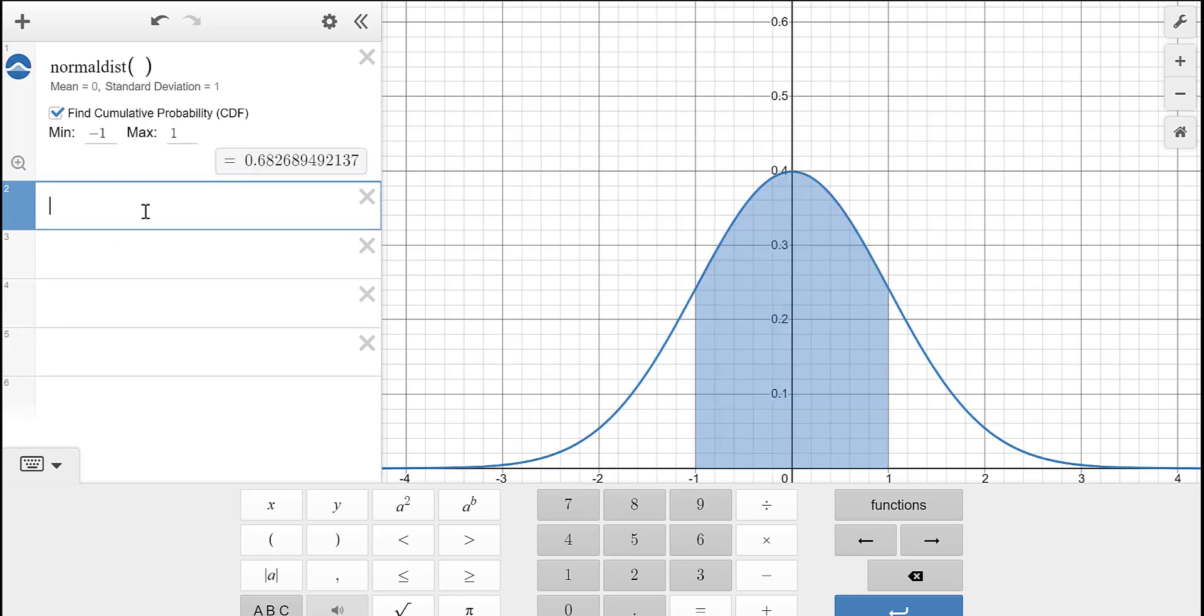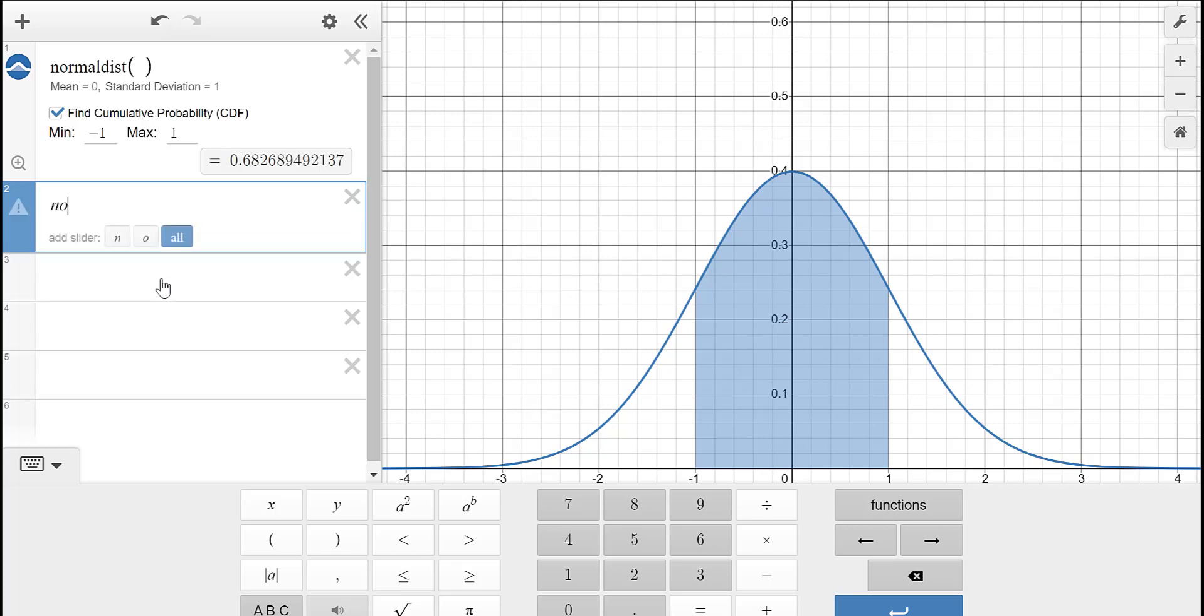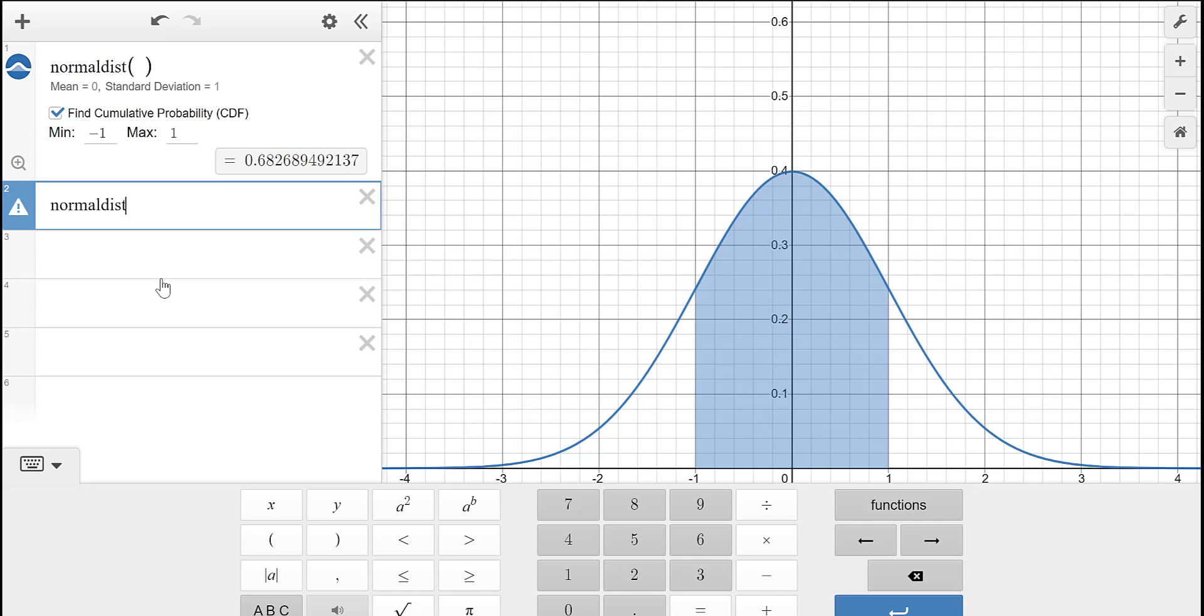So what we want to do today is go backwards and say, well, what if we wanted to know what z-score gives us 95 percentile? So what if 95% of the values are less than this number? So to do that, again, we're going to type normal dist, or you're going to go to the functions to pick it.